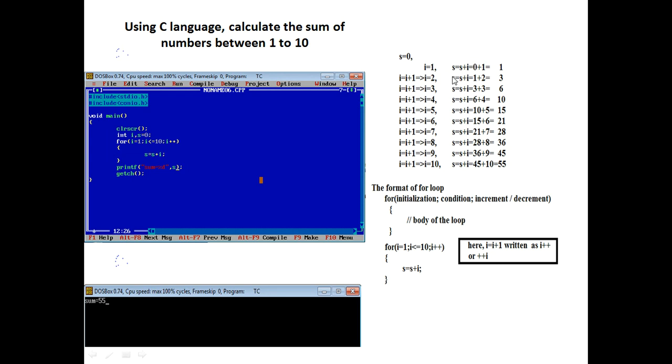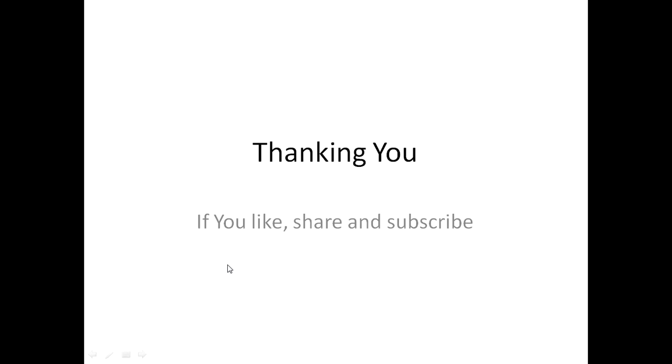And i less than 10, that is the final value of i. We write it as conditions, and we write the increment value i++. Here i++ means i equal to i plus 1. Okay, this is a simple code to write this program, and we print the value. This is the output. Thank you. If you like this video, then share and subscribe.